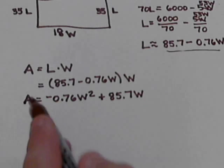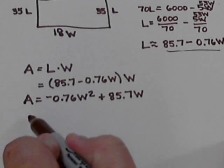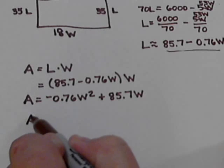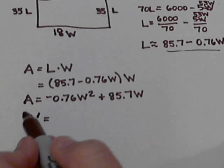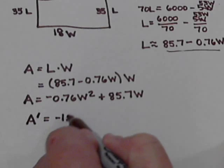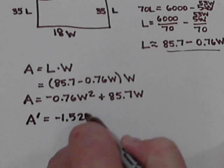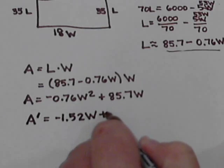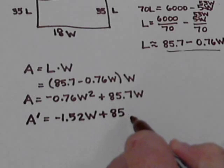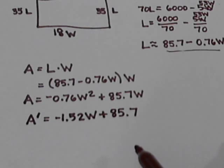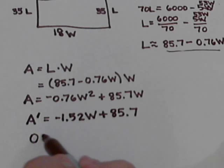We want to maximize the area, so we need to find the critical point. So we're going to take the derivative. So 2 times negative 0.76, so that's negative 1.52W. And then here, the linear term, we just dropped the variable. So we're left with 85.7. Make this equal to 0.